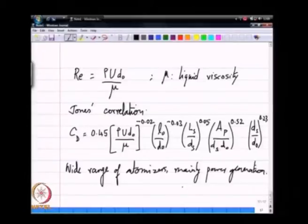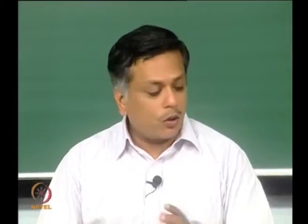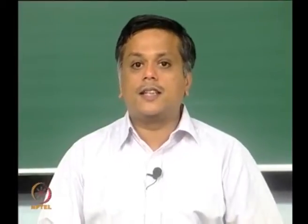I want to draw your attention to some of the exponents in this correlation. CD is essentially what we had for Reynolds number raised to the power minus 0.02. It is in fact the smallest in magnitude of all of the different exponents in the correlation.